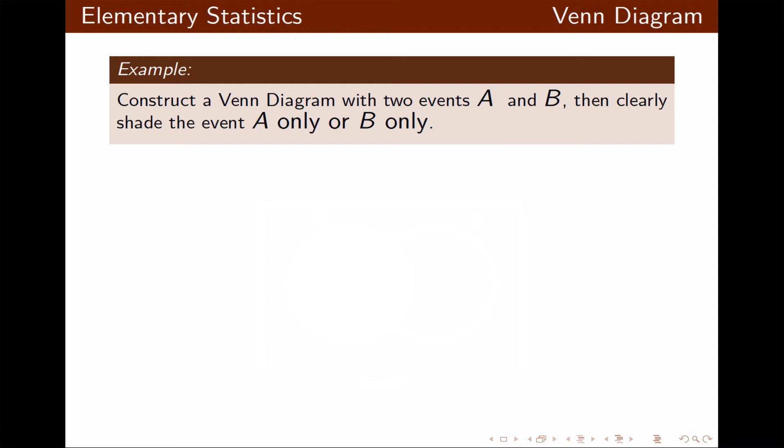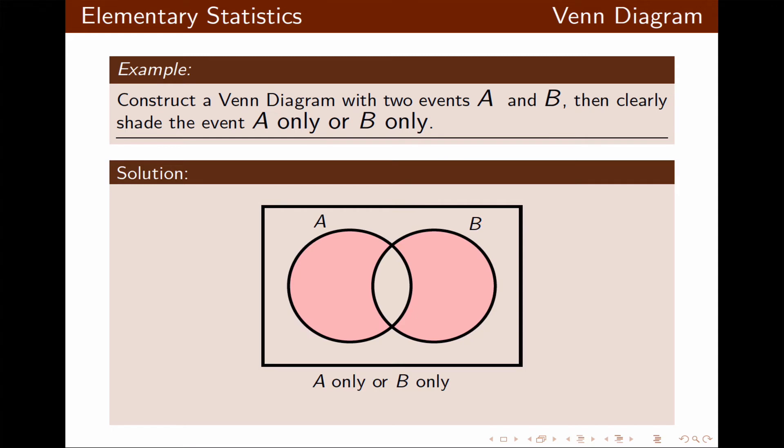A only is shaded inside of A but nowhere else, and B only is shaded inside of B and nowhere else, so the overlap is not shaded. As you can see, A only and B only are both shaded. Because of the or condition, we consider whatever is shaded in either region.